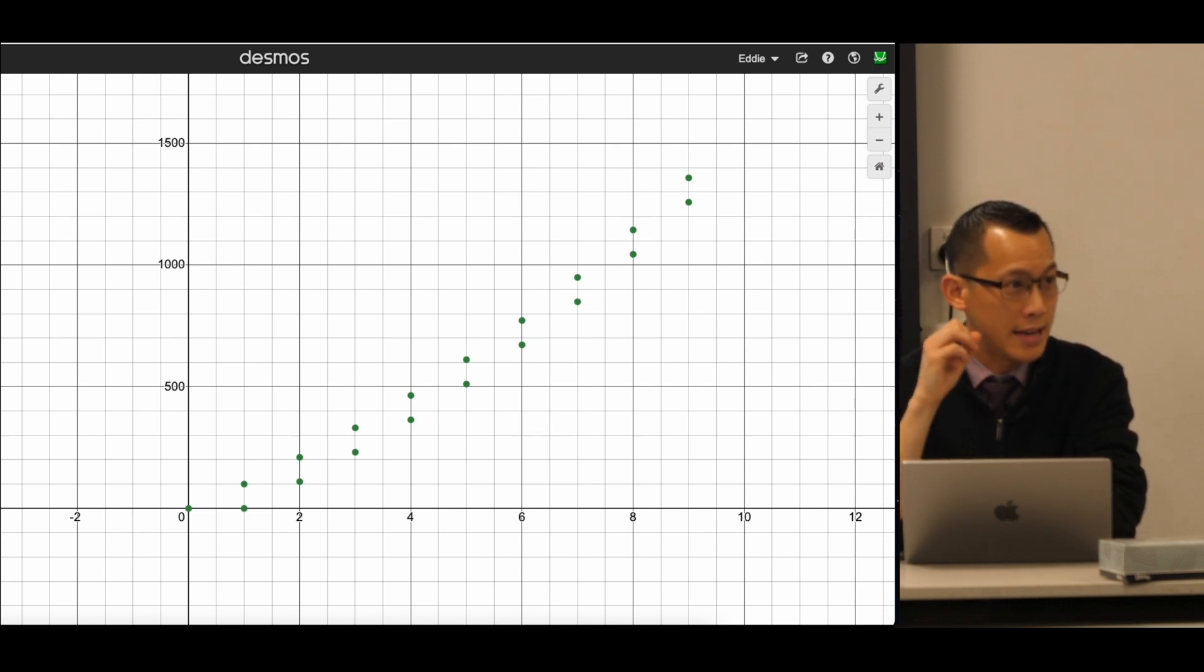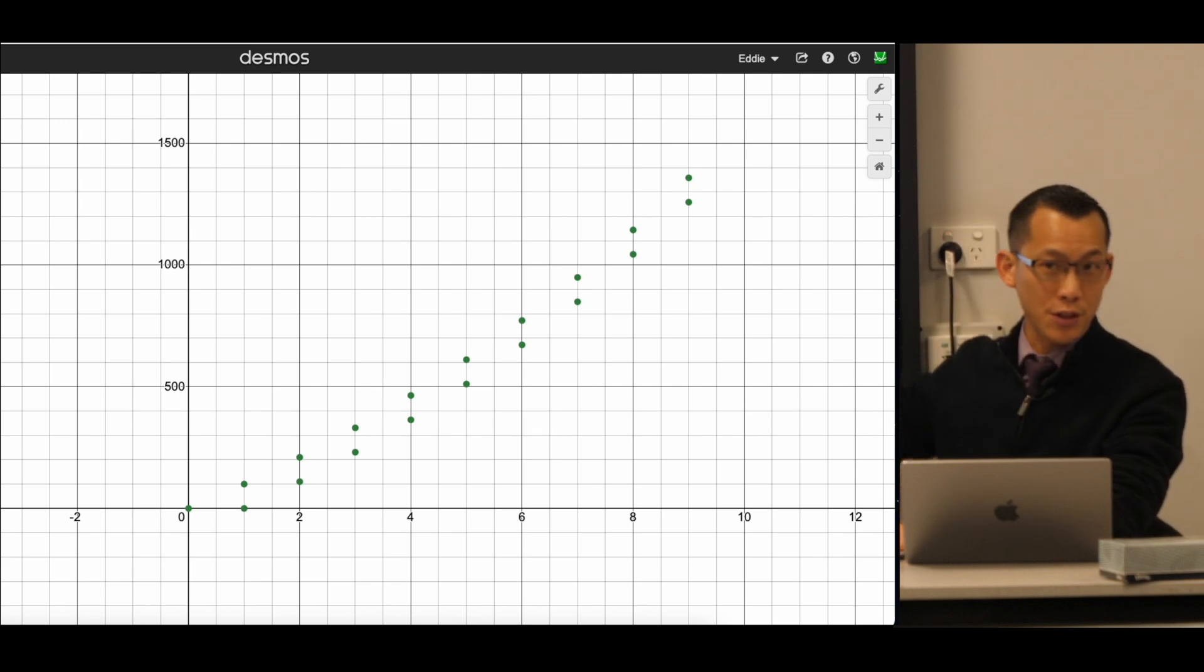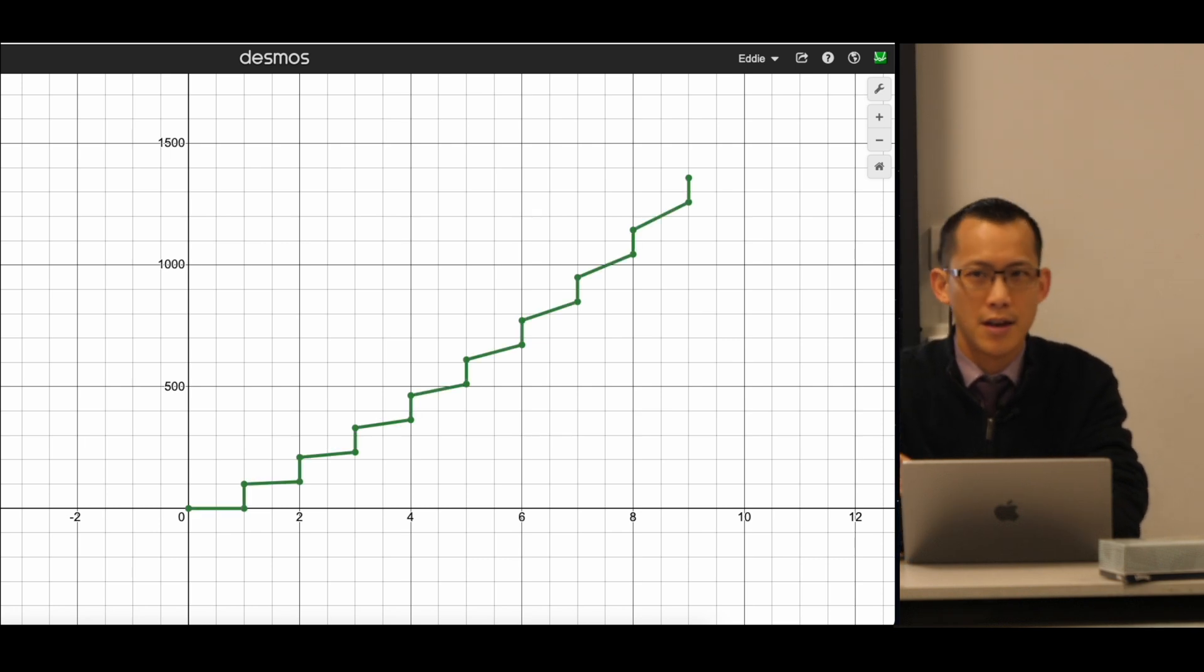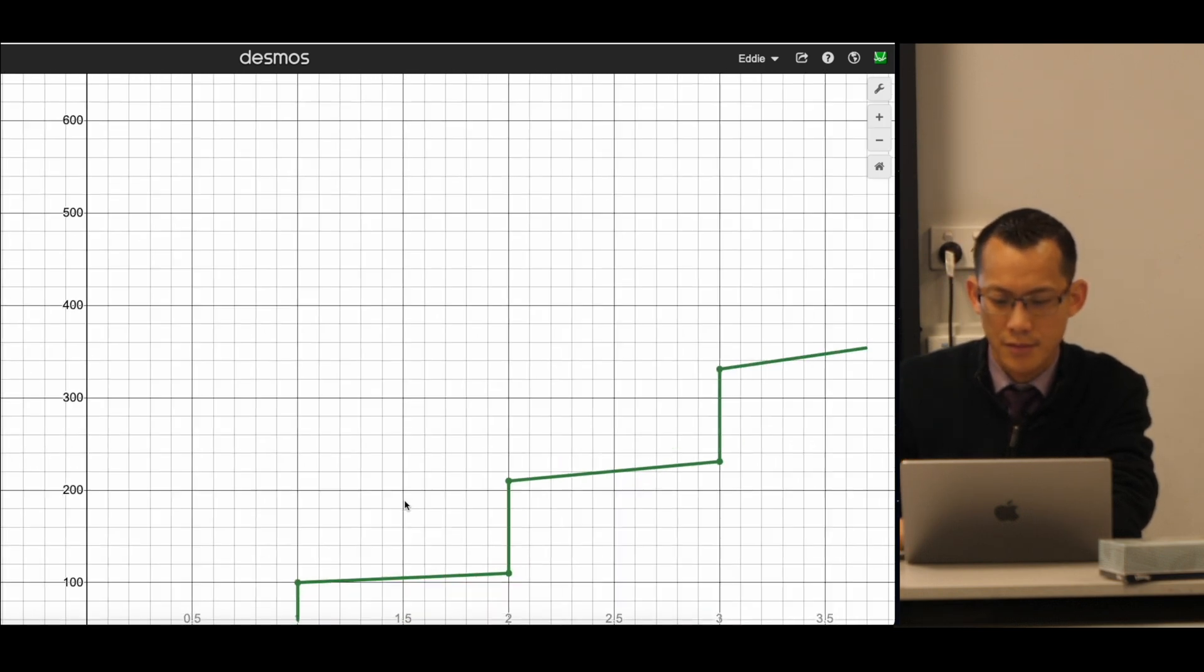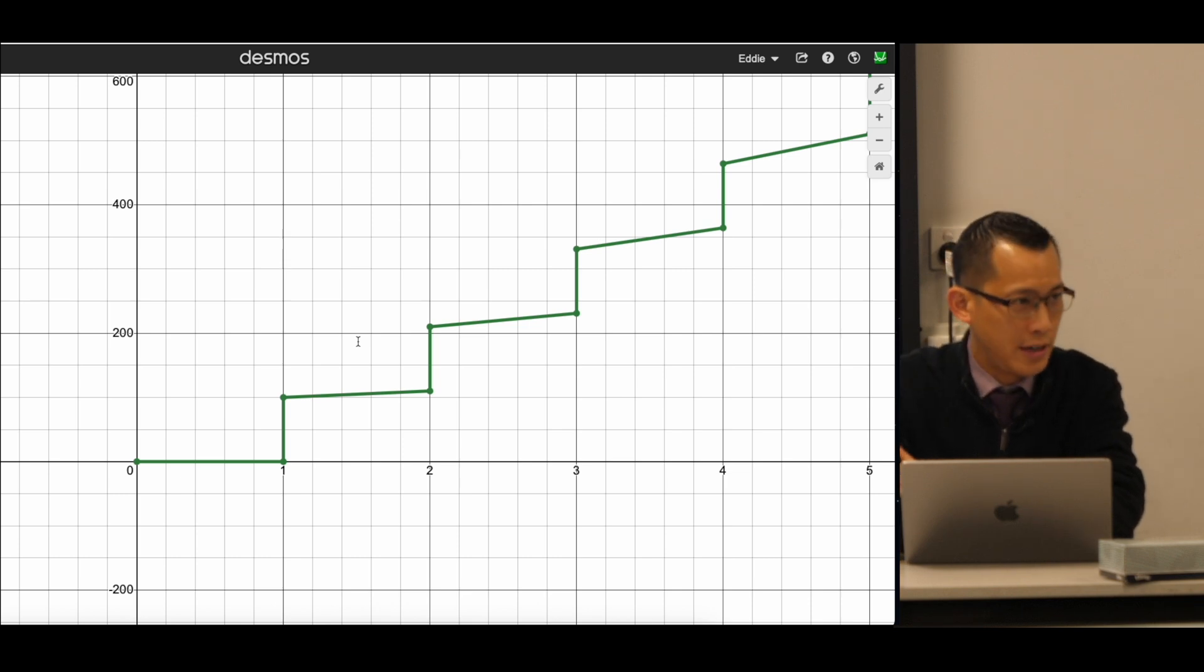Each of those green points is a different amount of money at a different amount of time. So I've got time on the horizontal axis here and the value of the account on the vertical axis. Now, it's easier to see if I actually join up the lines. I want you to look carefully. Let me zoom in for a section here. What is going on here? Why does the model look like this?